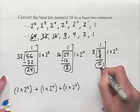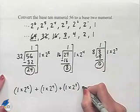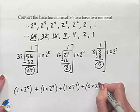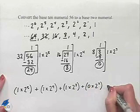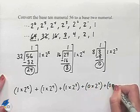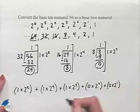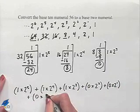But notice that we have a remainder of 0, which means that we're going to end up having 0 times 2 squared, 0 times 2 to the 1st, and I'll write it down here, 0 times 1.